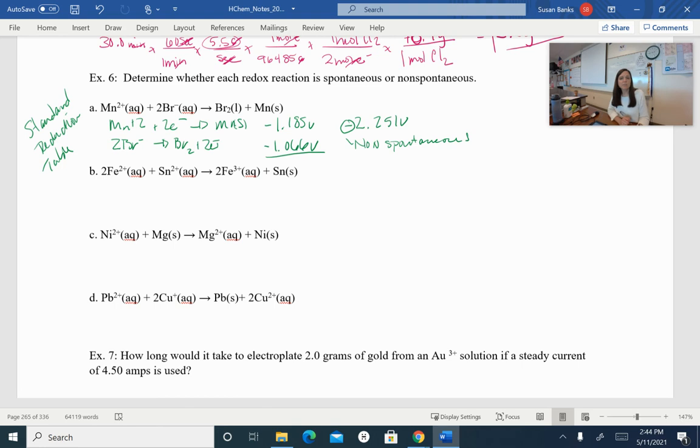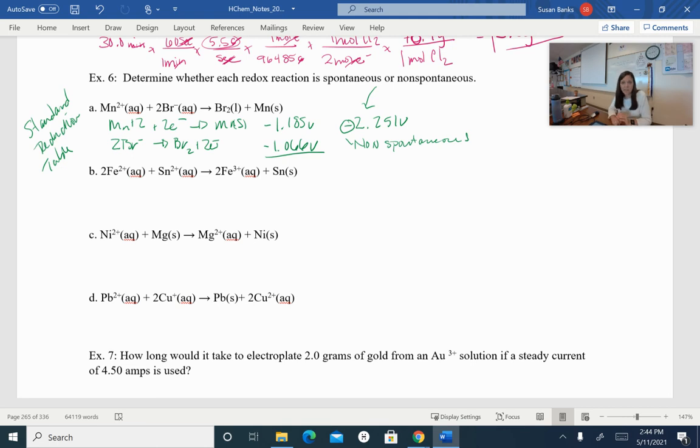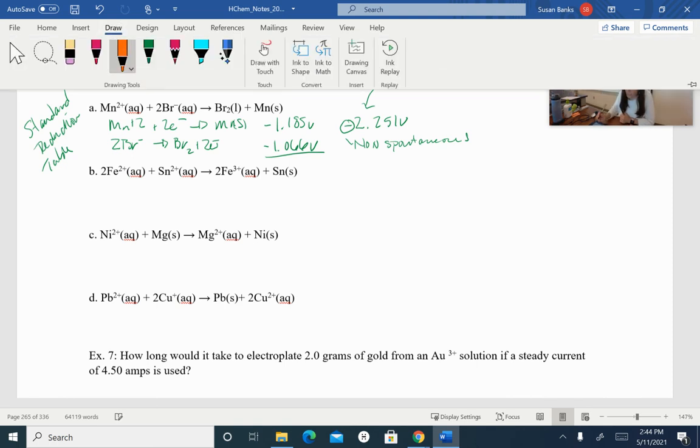So if I would want to actually run this reaction, I would have to set this up with an electrolytic cell, and I would need a power source that has greater than 2.251 volts to get that to run. Because I'm going to need more than 2.251 volts to push those electrons in the reverse direction. Next we've got, why don't you look up these, see if they're spontaneous or not, and come back and check.